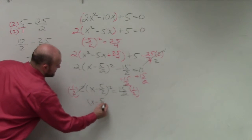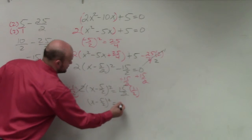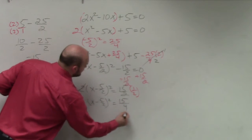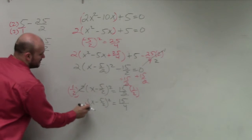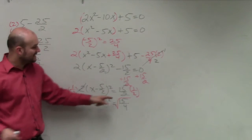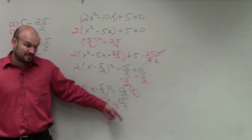Because any number multiplied by a reciprocal goes to 1. So we have x minus 5 halves squared equals 15 over 4. Multiply numerator times numerator, denominator times denominator, undo squaring by taking the square root. I can't take the square root of 15, but I can take the square root of 4.